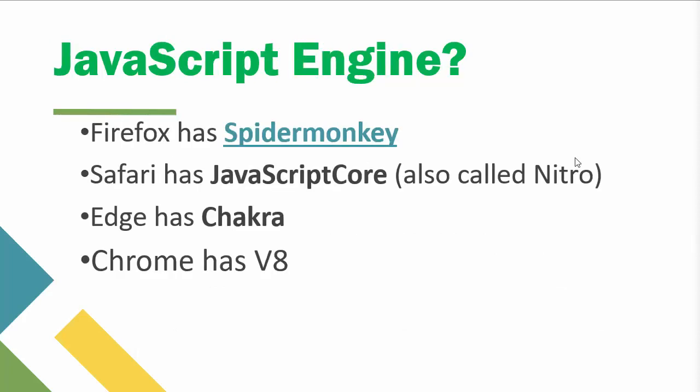You can look up the JavaScript engines used by major browsers. For example, Firefox uses SpiderMonkey, Safari uses JavaScriptCore (also called Nitro), Microsoft Edge uses the Chakra JavaScript engine, and Chrome uses the V8 engine. Every major browser has its own JavaScript engine, and Node.js uses the V8 JavaScript engine.